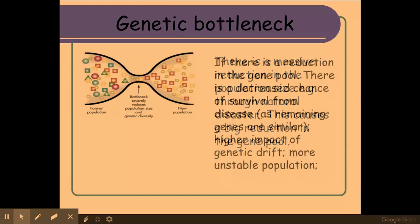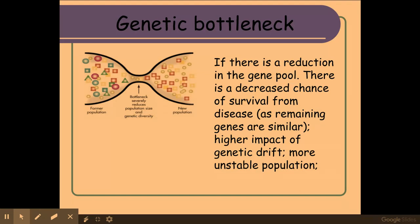A massive reduction in the gene pool of a population means that the population will have a decreased chance of survival from things such as disease. This is because the remaining individuals within the population will have very similar genes. This smaller population will also have a higher impact from genetic drift and will be more unstable.